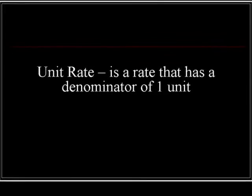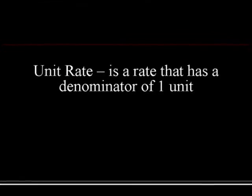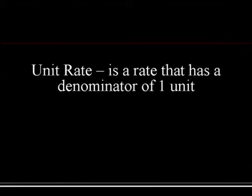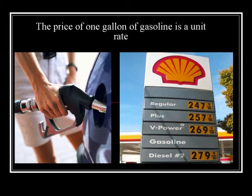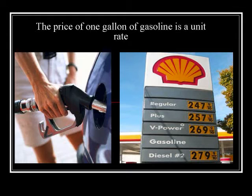A unit rate is a type of rate that has a denominator of 1 unit. One example of a unit rate that you probably see every day is the price of gasoline. A gas station sign advertising the price of 4 different types of gas per 1 gallon is a unit rate, because it shows the price of 1 gallon.